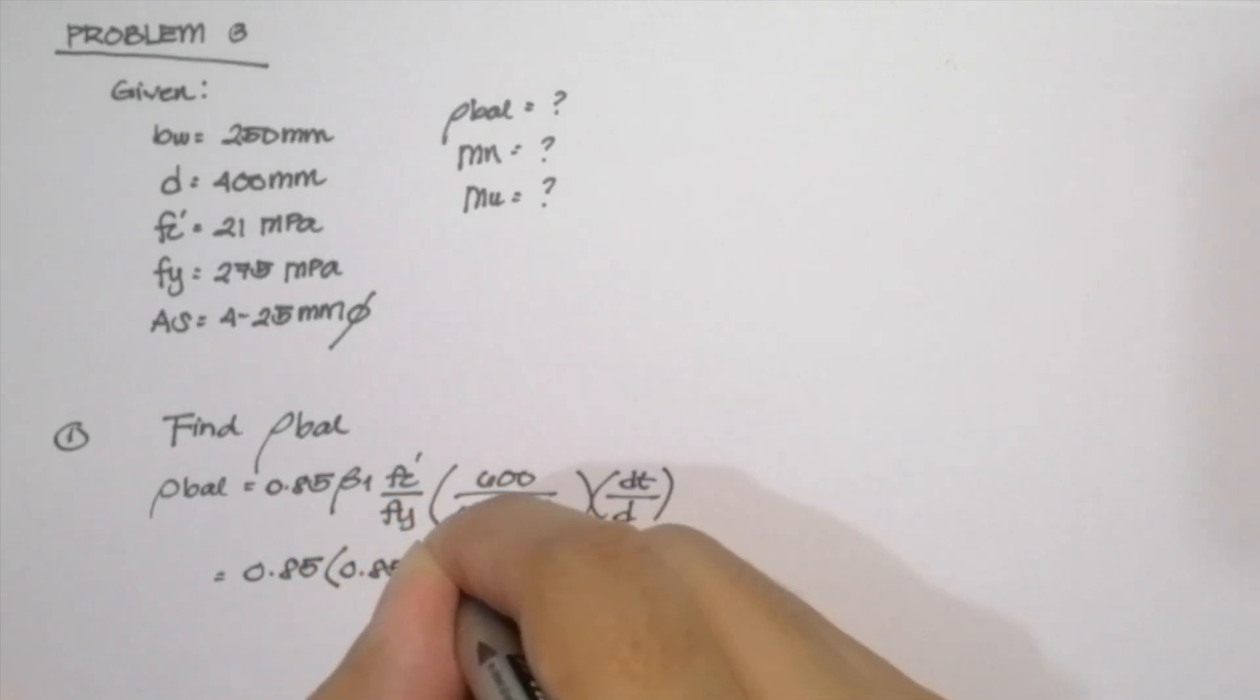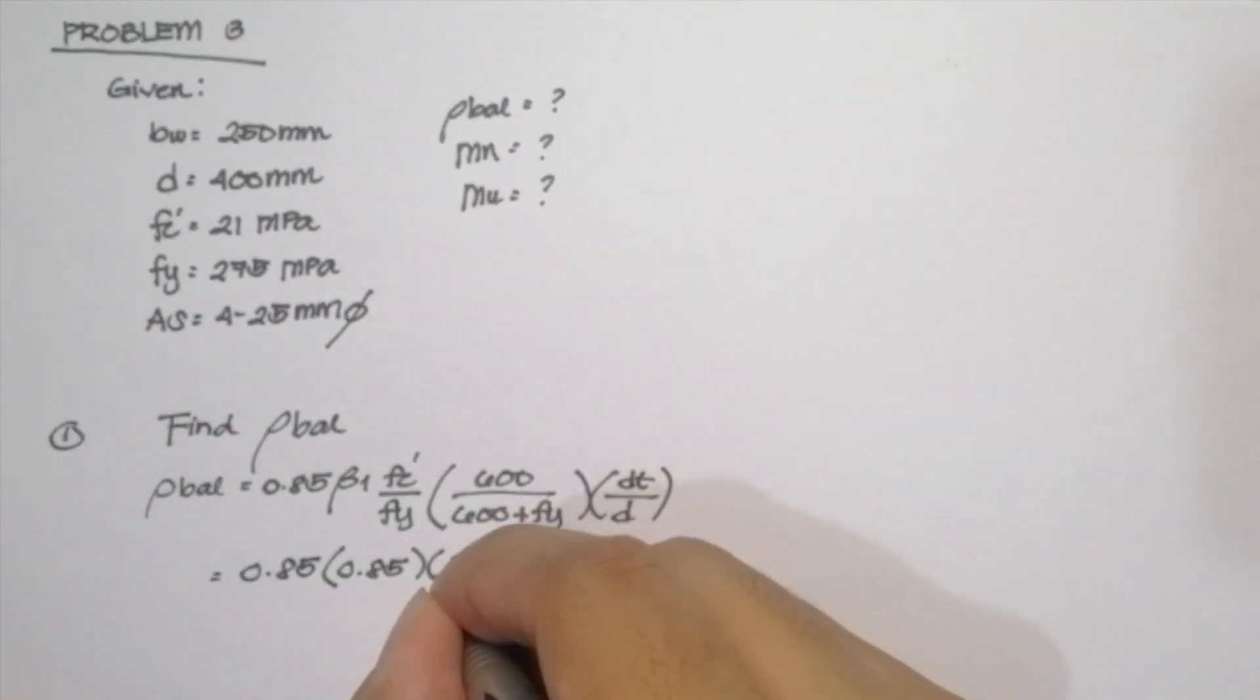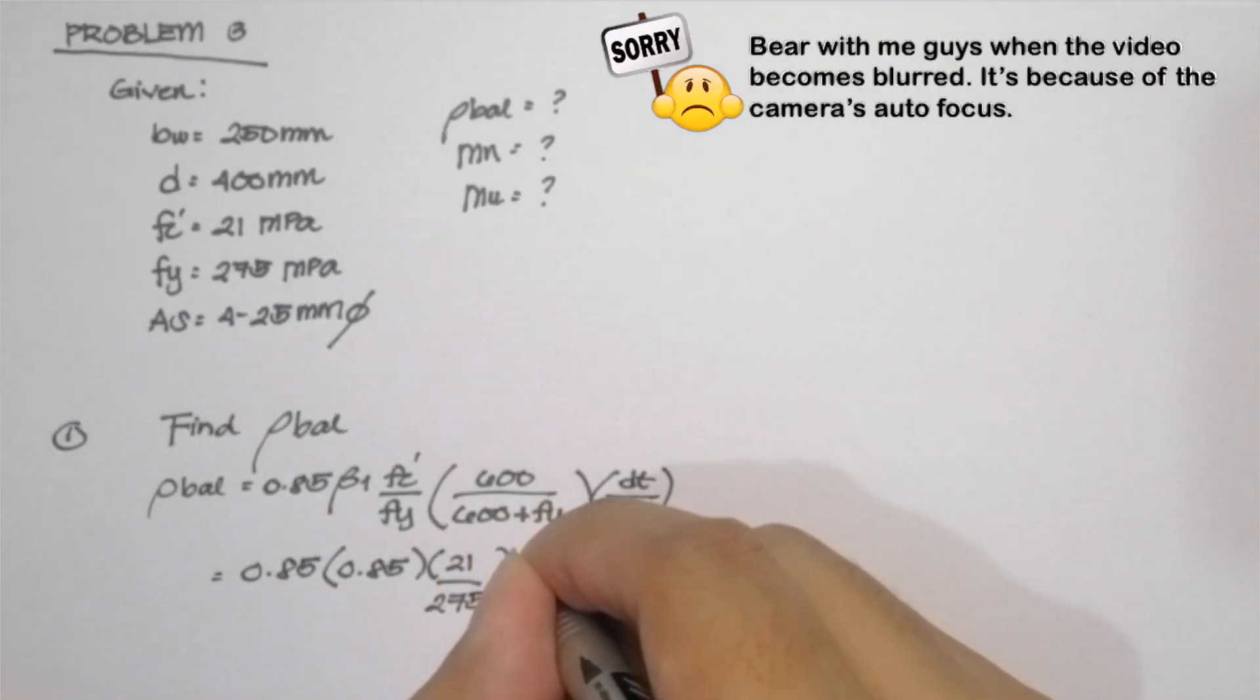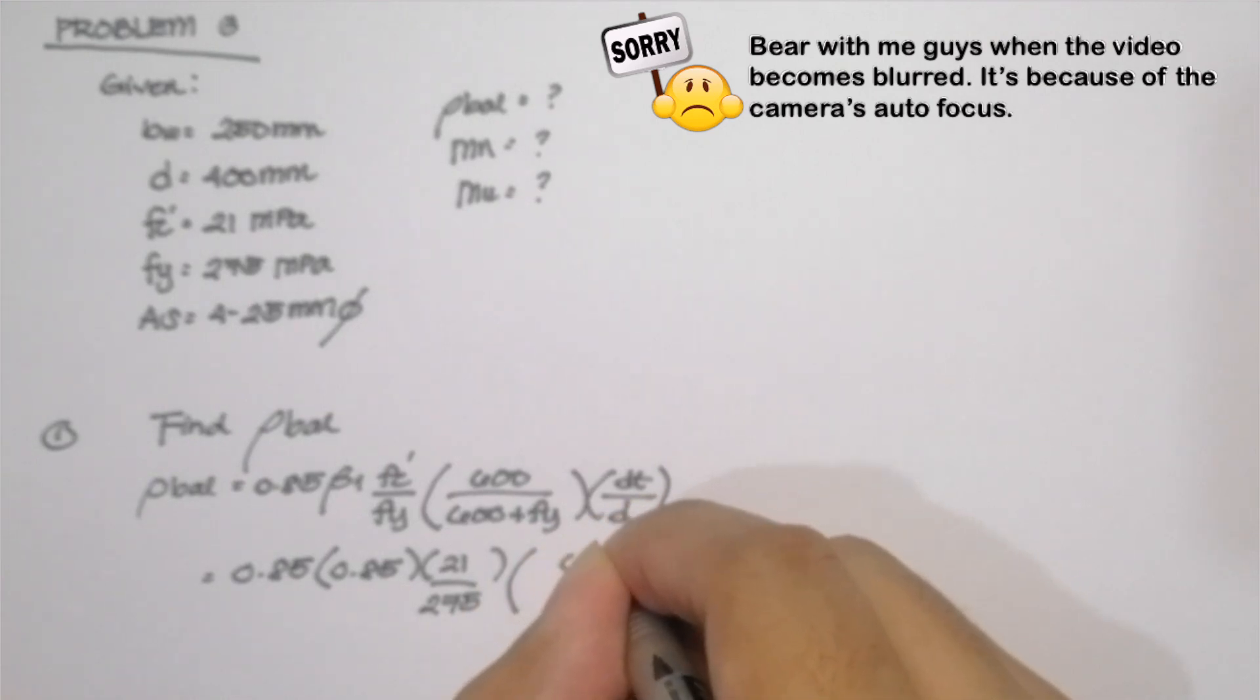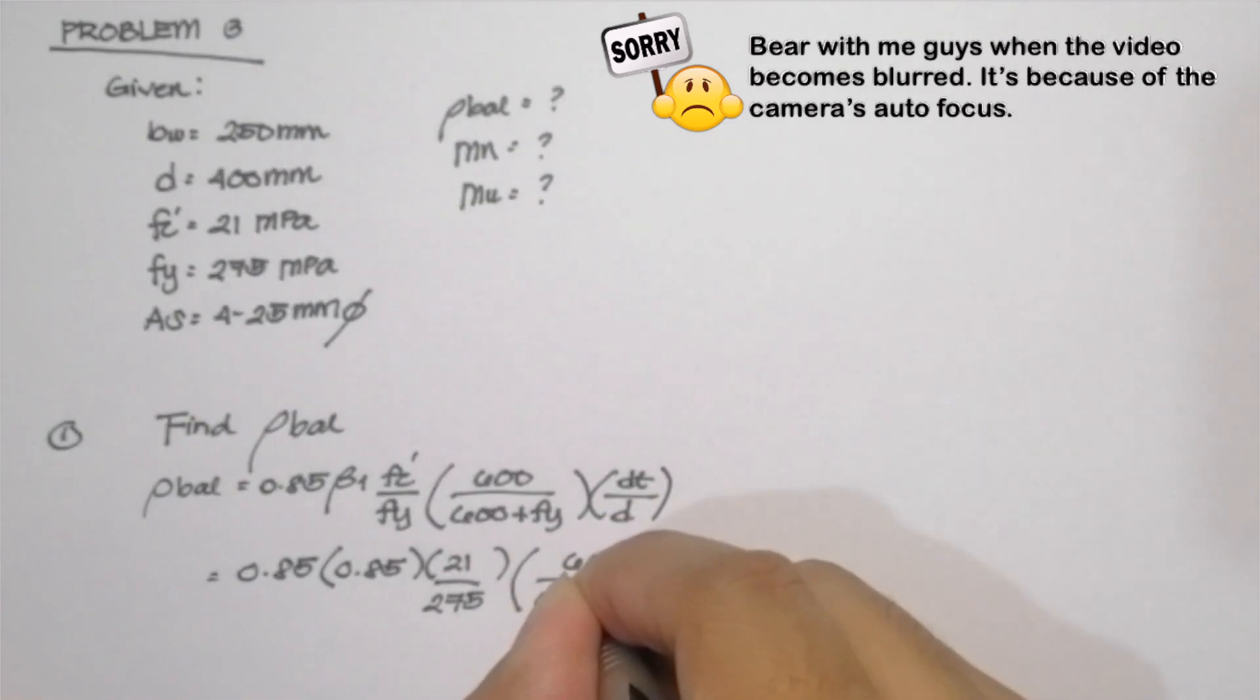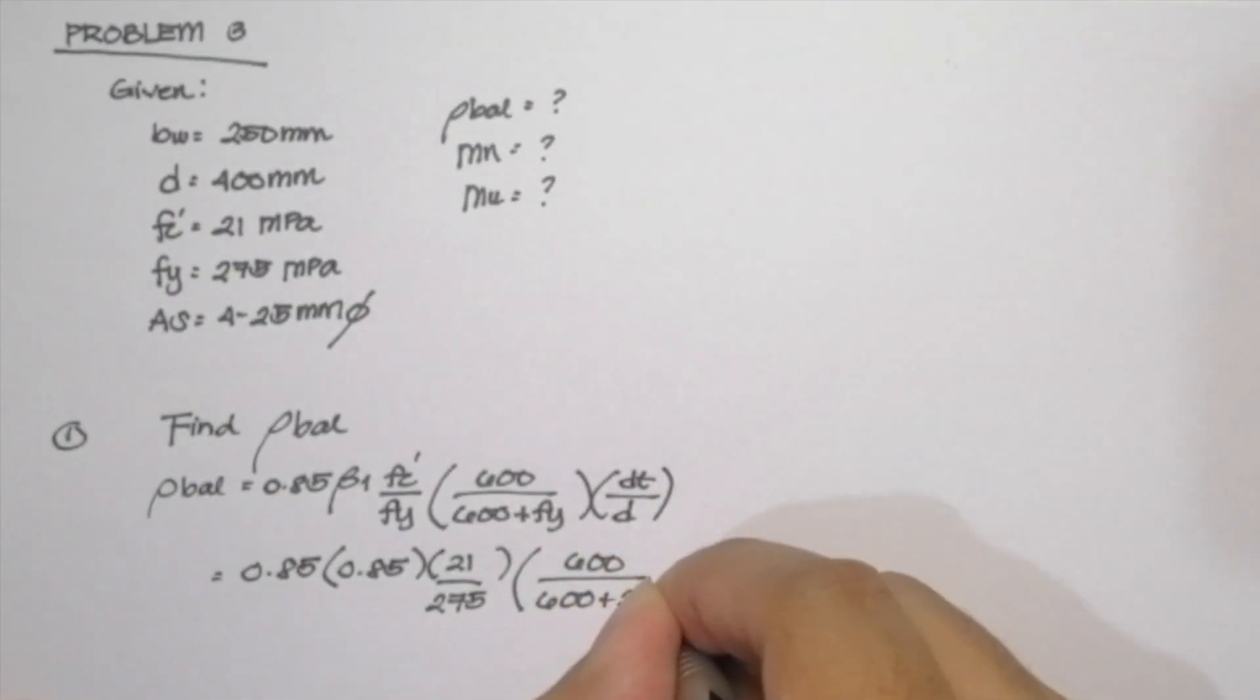So by inputting our values, 0.85 multiplied by 0.85 multiplied by 21 over 275 multiplied by 600 over 600 plus 275. And the value of our dt over d is automatically 1 since we only have a value of d and it is assumed to be the same.